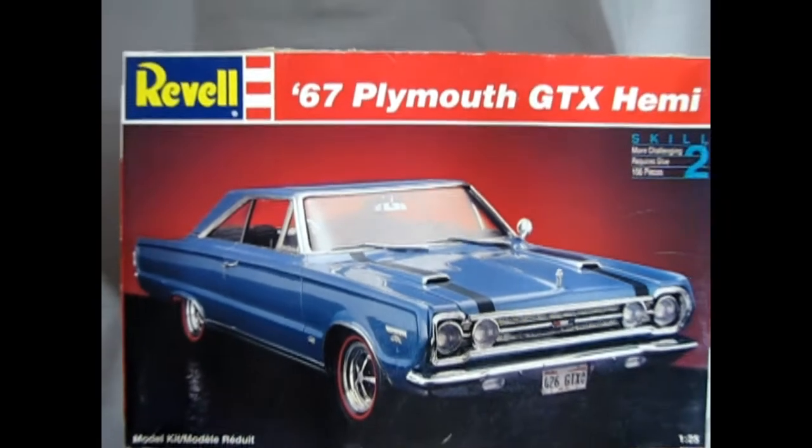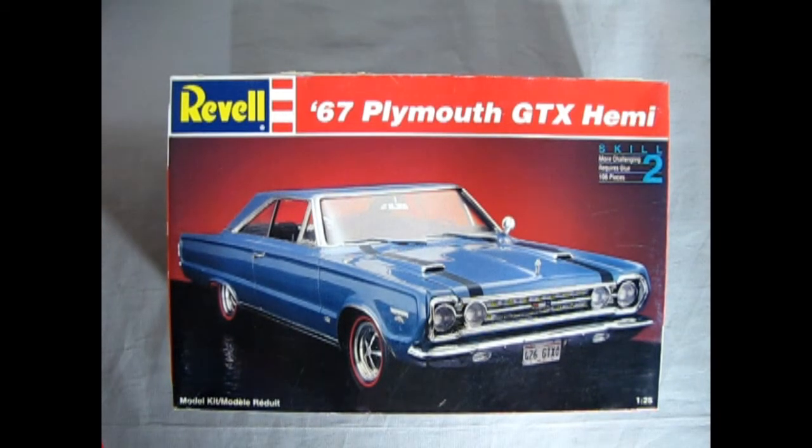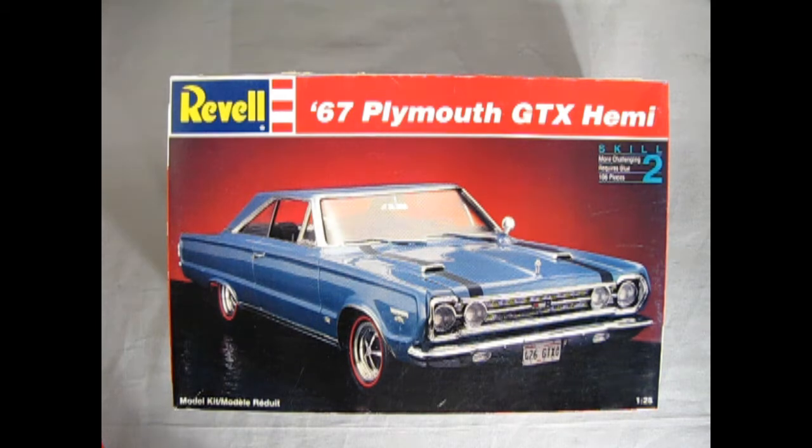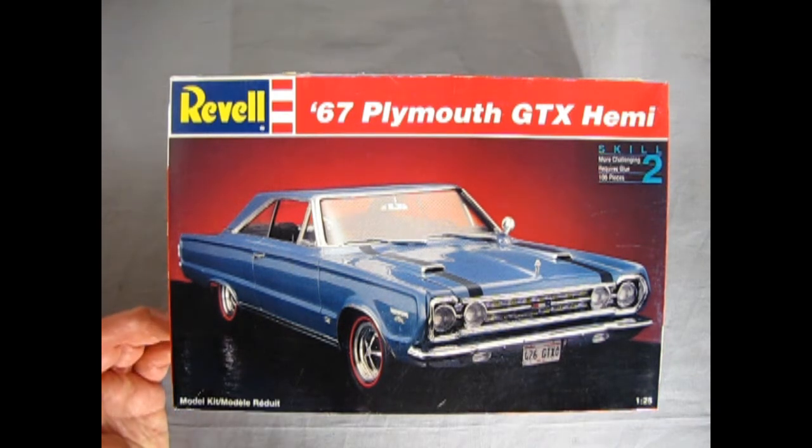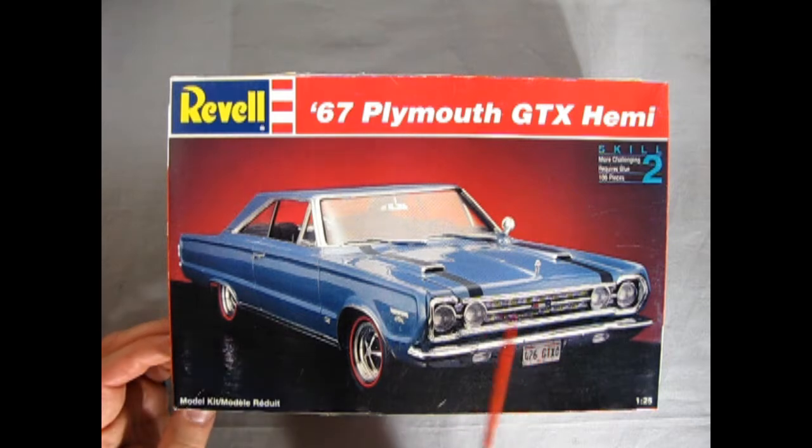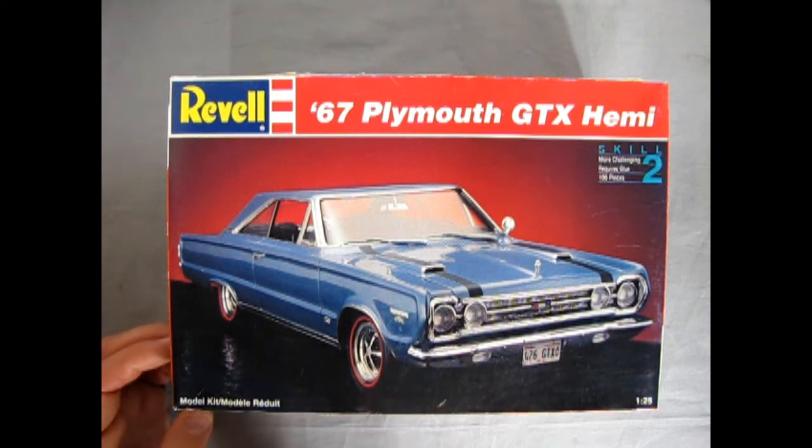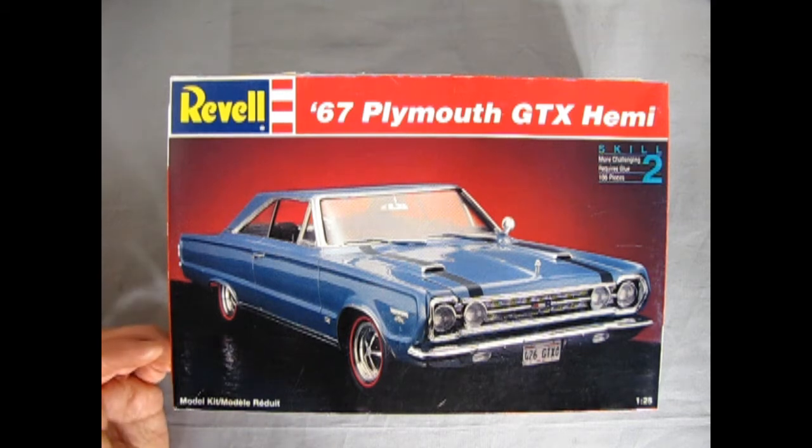Plymouth is out to win you over for 1967, and that couldn't be more apparent in the Belvedere, which added GTX muscle models with standard 440 cubic inch V8s. However, the hot guys got even hotter by dropping in the 426 Hemi into their Plymouth, which of course was a factory option, but a rare one. You can see on the front of the box here, you've got the two nice scoops on the car hood. Very cool looking!